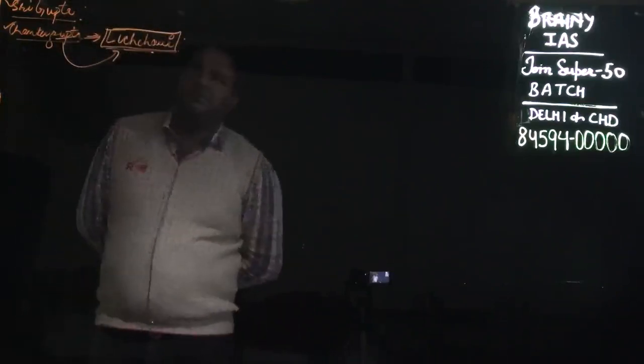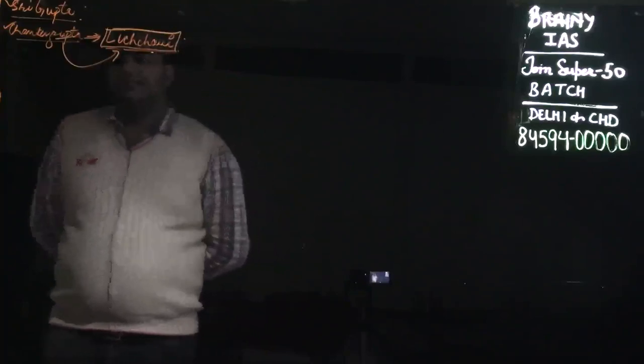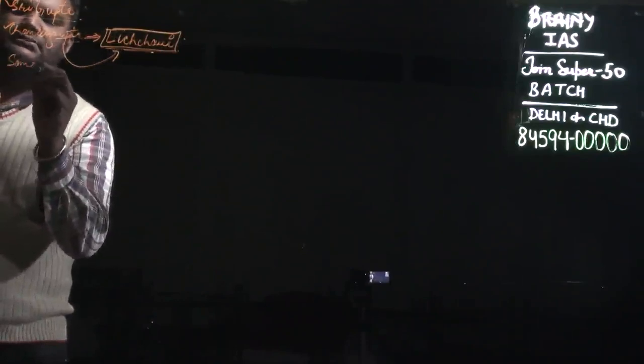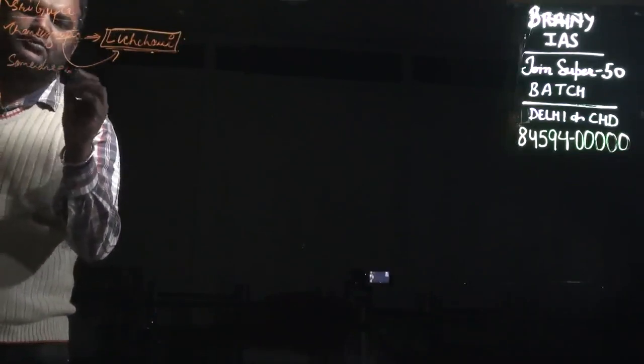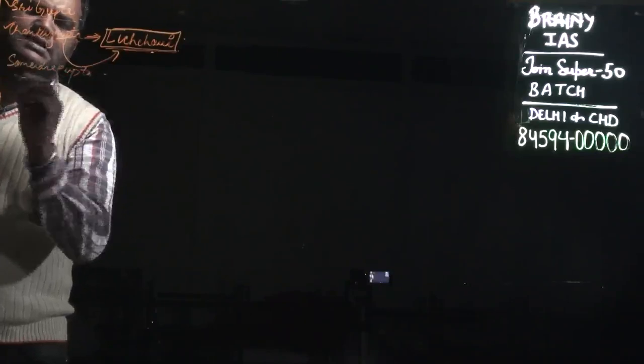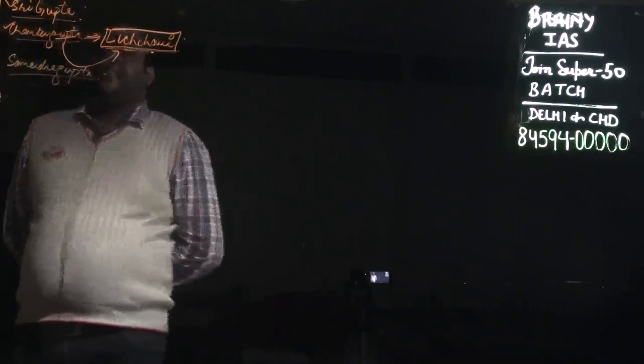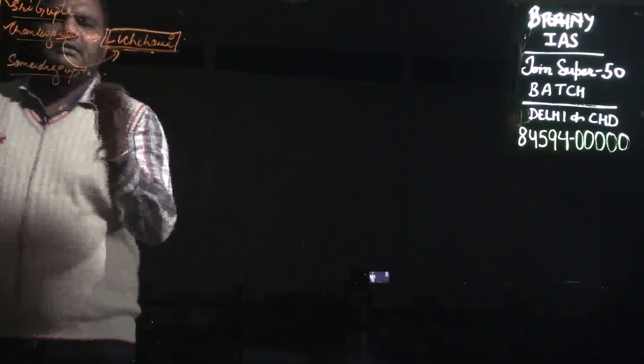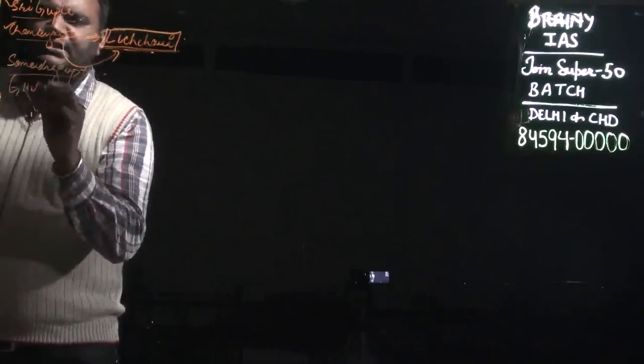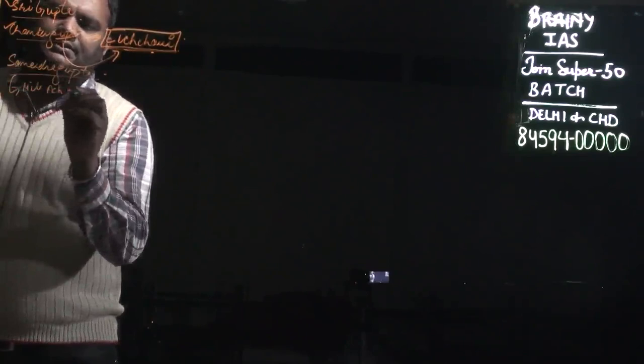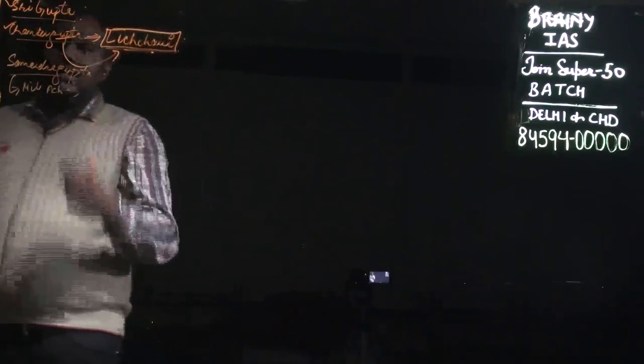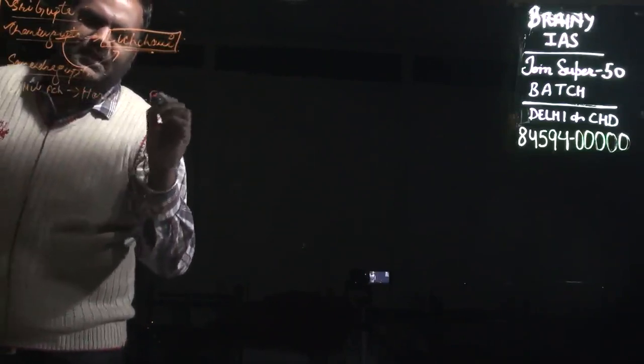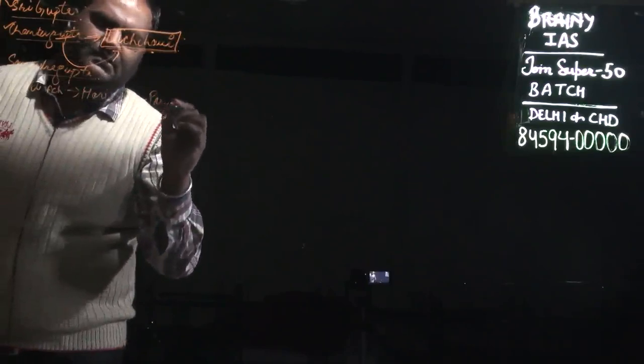The next ruler after Chandra Gupta was Samudra Gupta. He is also known as the Napoleon of India. All his military achievements are mentioned in the Prayag Prashasti, written by Harisena.